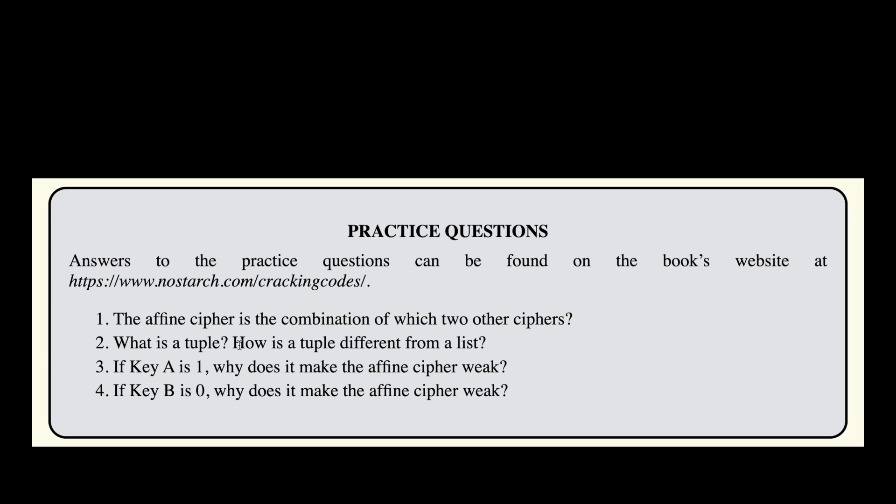What is a tuple, and how is it different from a list? A tuple is a data type that can contain other values just as a list, but in contrast to a list, its values are immutable and therefore cannot be changed.